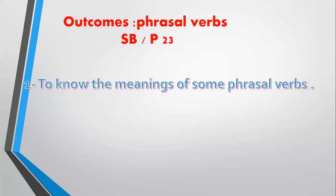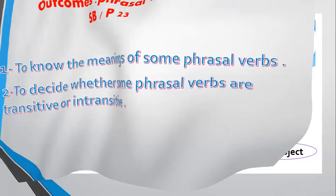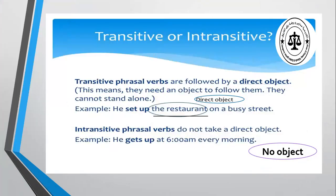On this page, students are going to know the meanings of some phrasal verbs, and you are also going to decide whether some phrasal verbs are transitive or intransitive. Before doing the first activity, I want to remind you what we mean by phrasal verbs. As I told you in our previous lesson, phrasal verbs are a group of verbs that are followed by a preposition. We have two types of phrasal verbs in English: transitive phrasal verbs, which are followed by a direct object.